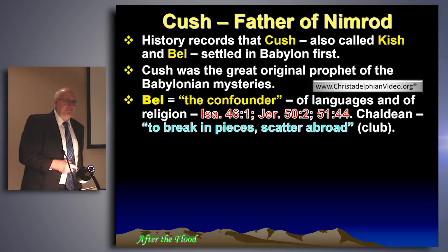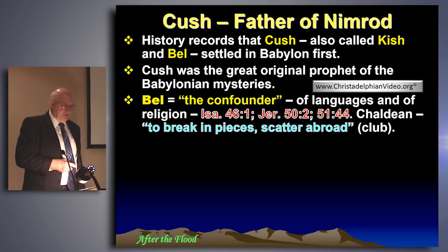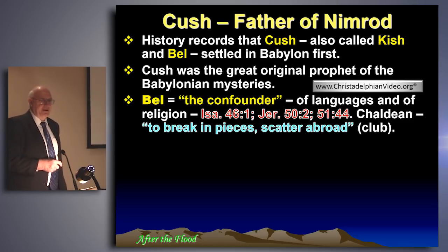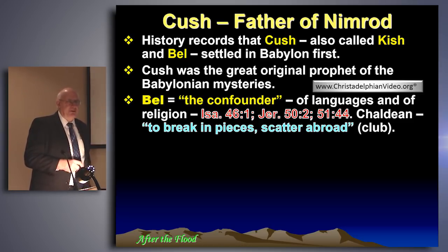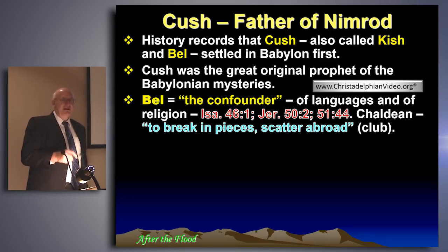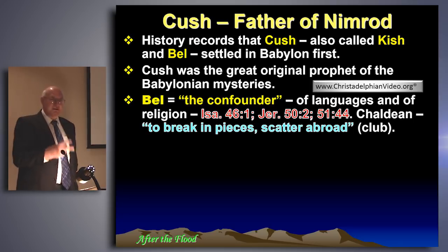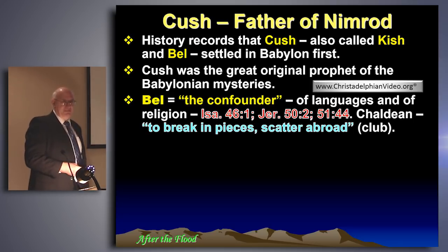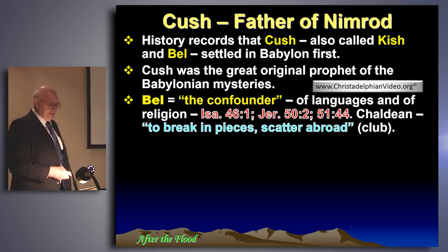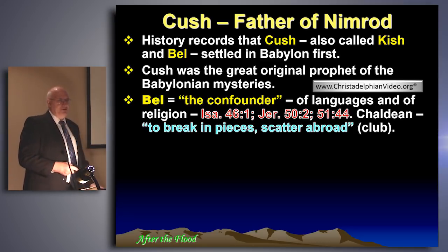Jeremiah 50 and 51 just happen to be the basis of the whole of the Apocalypse — much of the language of the Apocalypse is drawn from those chapters. The name Babylon occurs there 55 times in two chapters, and it's clearly a prophecy of the latter days as well as of the past. So here you've got a very important individual in Cush known as Bel.